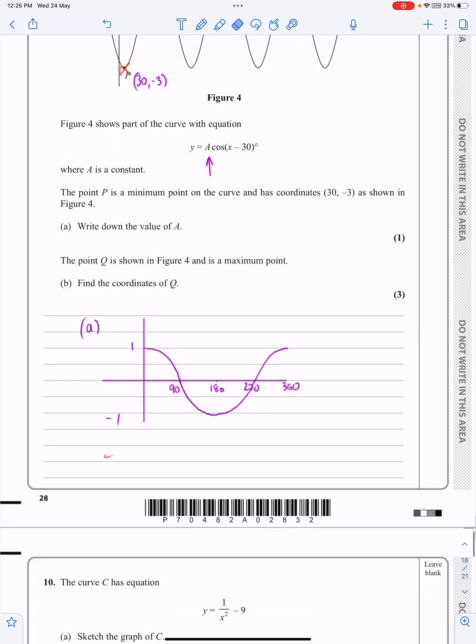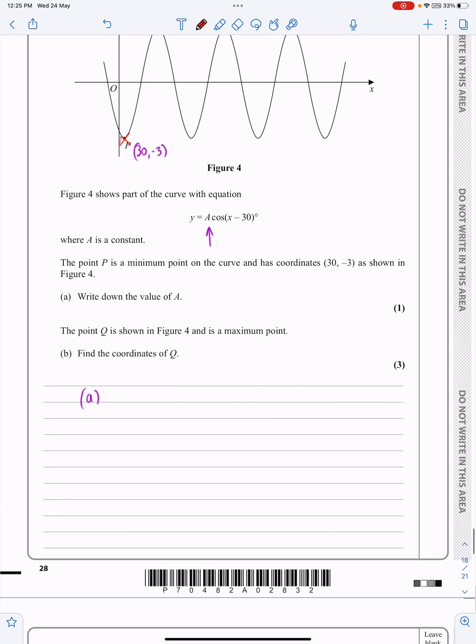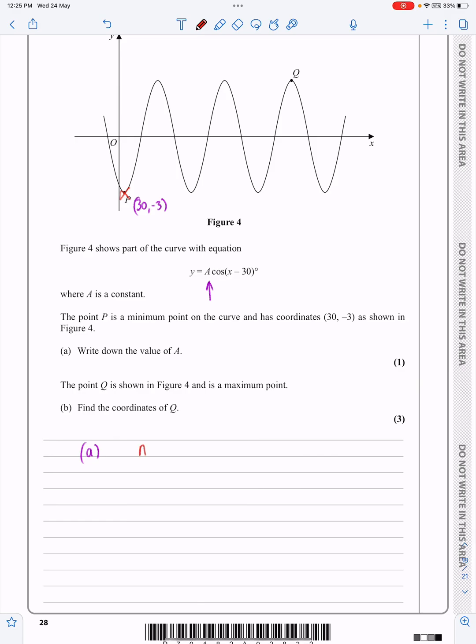So, for part A, I don't need this graph now, I'm just using this to help me. Part A, it's only one mark, so you can just write it in. A here is going to be equal to minus 3. That's why we've got a maximum and a minimum of 3 there, that means it's got to be the size of 3, the magnitude of 3, but the minus is what flips it over. Okay, so that's part A done.